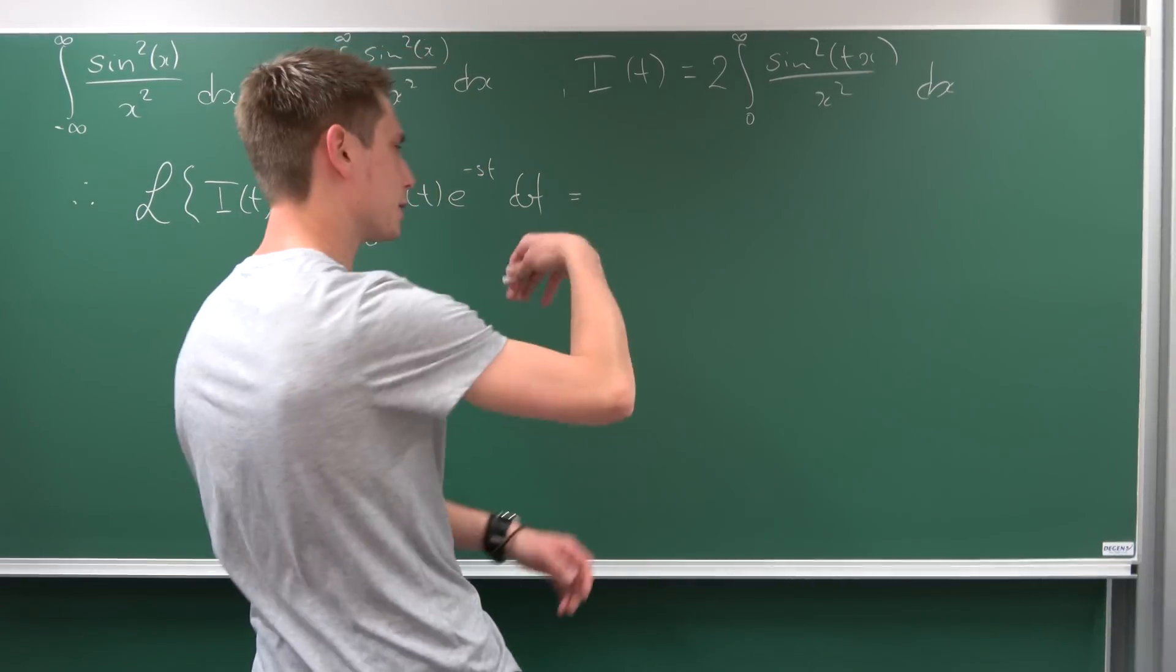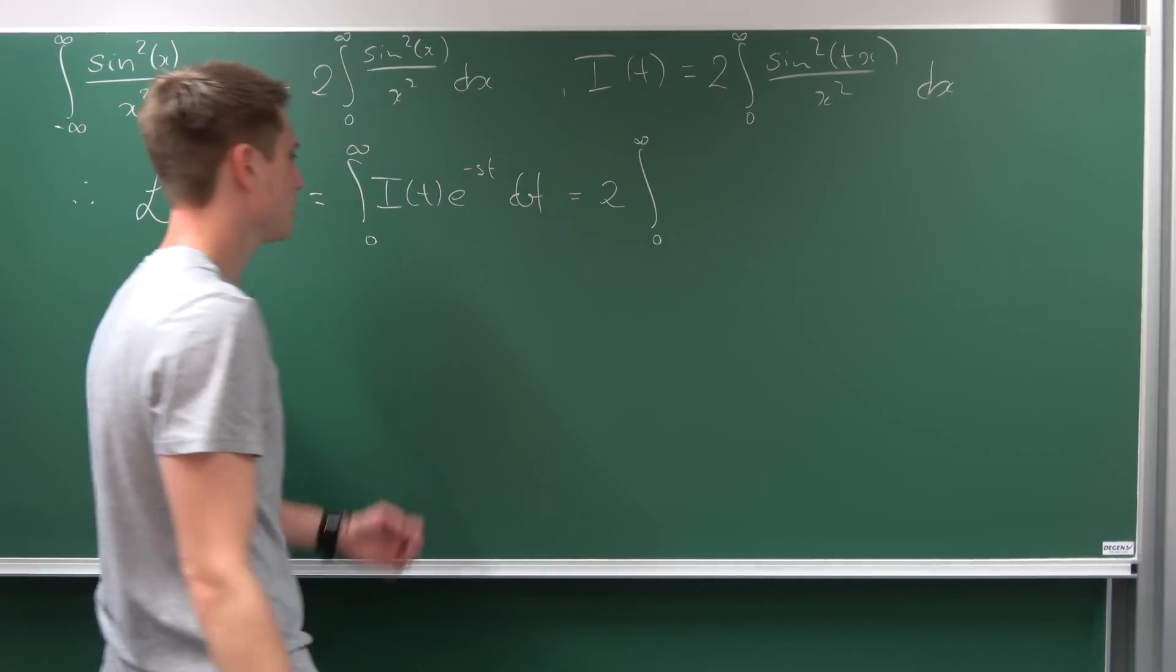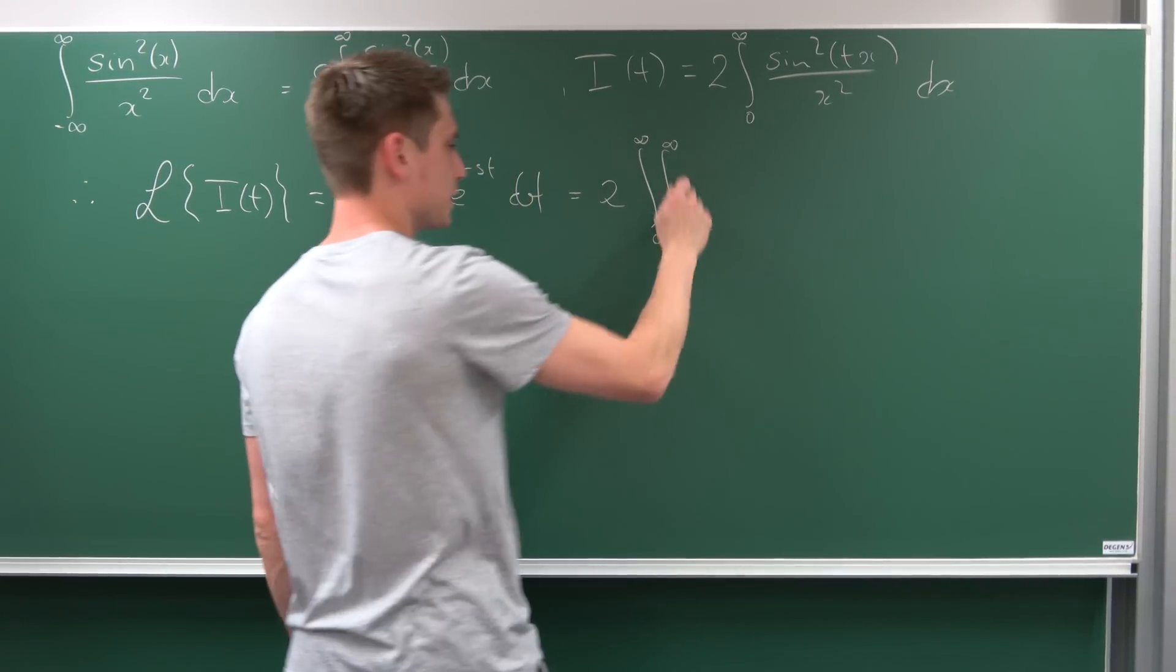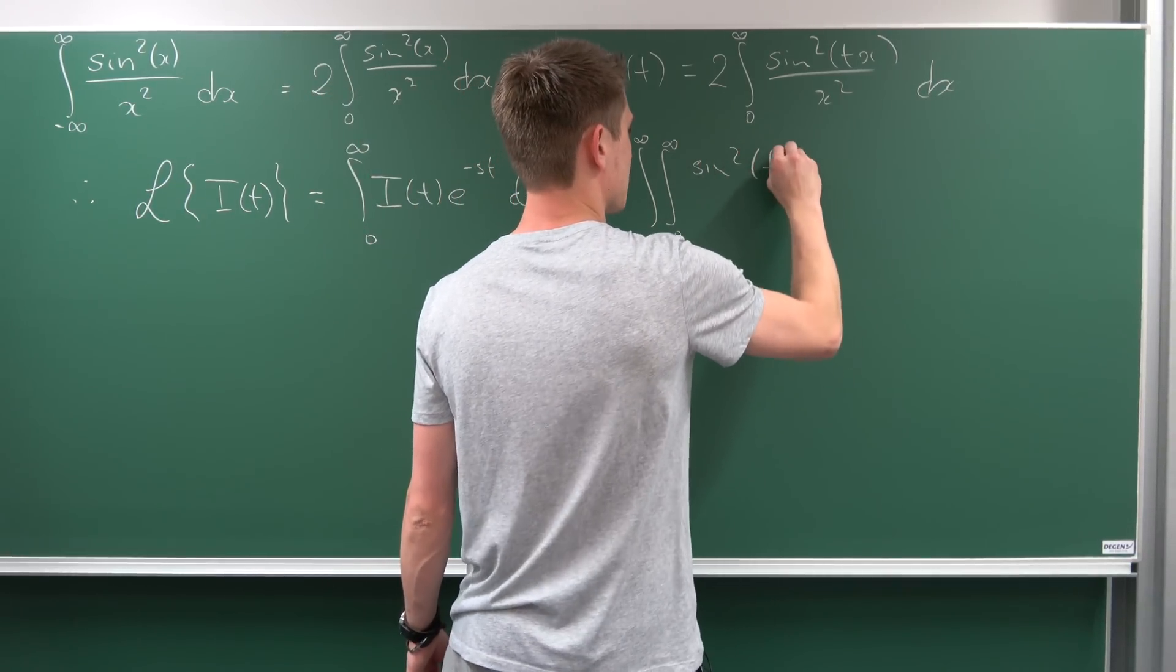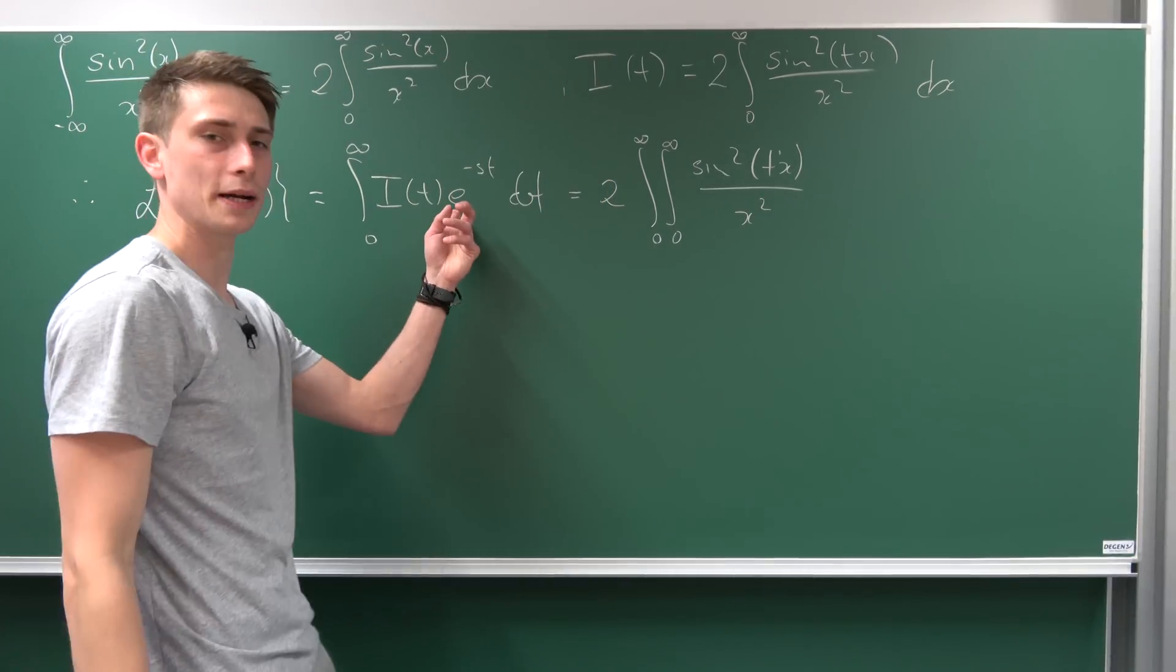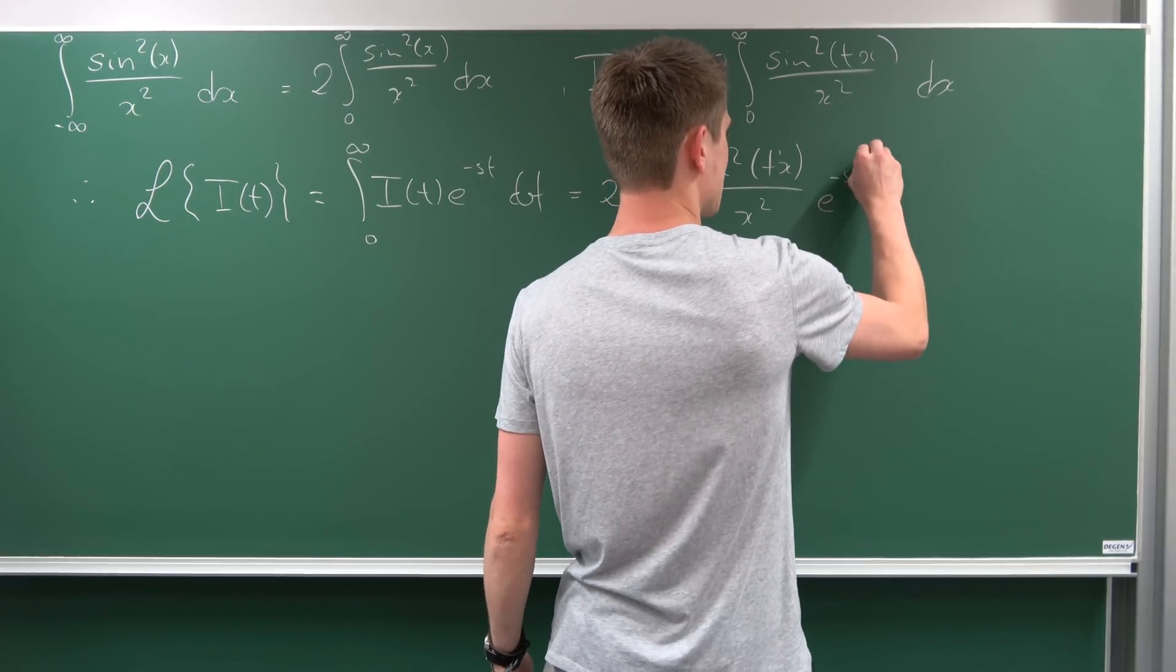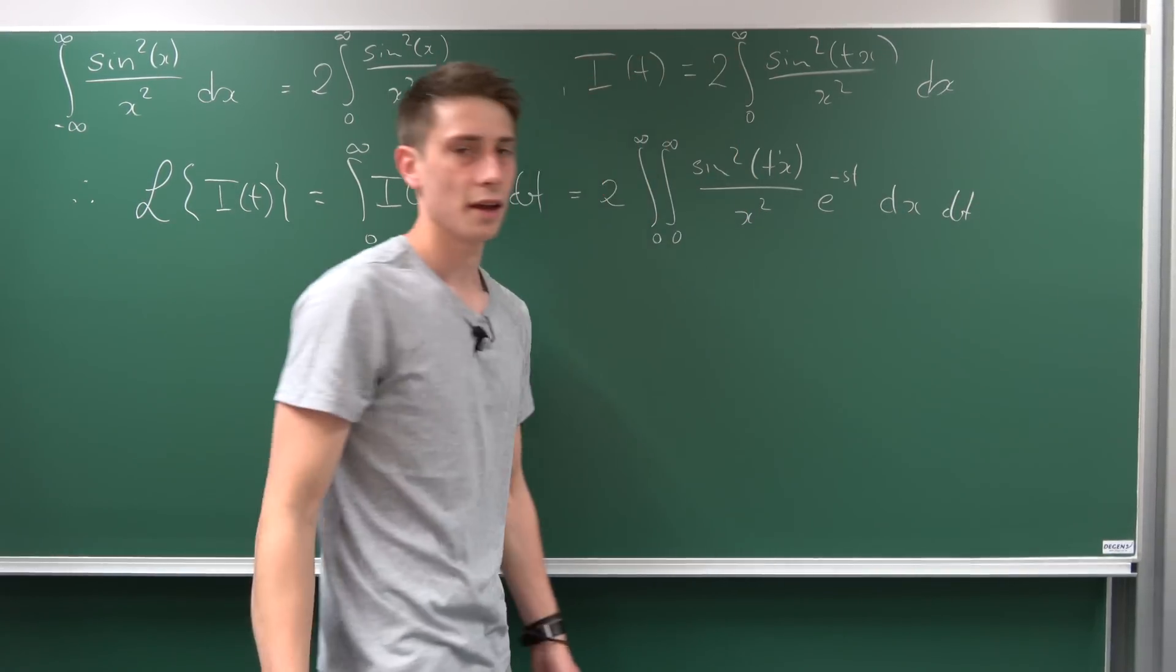We have a factor of 2 we can bring to the front. So we have 2 times the integral from 0 to infinity, when t goes from 0 to infinity, of the integral from 0 to infinity (in terms of x) of sin²(tx) over x². e^(-st) in terms of x is just a constant, so we can bring it inside: e^(-st), and now we have dx dt.